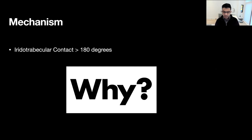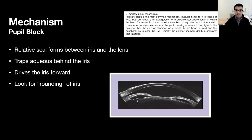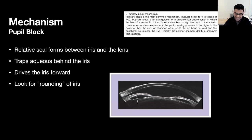We've defined angle closure based on 180 degrees of iridotrabecular contact — but what's the cause of that angle closure? Why is the eye's physiologic drainage system closed off and not functioning correctly? Mechanism one is pupil block, thought to be the most common mechanism, affecting an estimated 75% of patients with primary angle closure. Pupil block occurs when there's a relative seal that forms between the iris and the lens, trapping aqueous behind the iris in front of the anterior capsule.